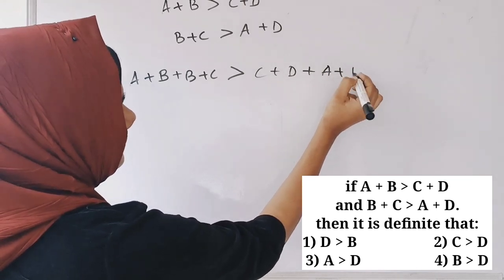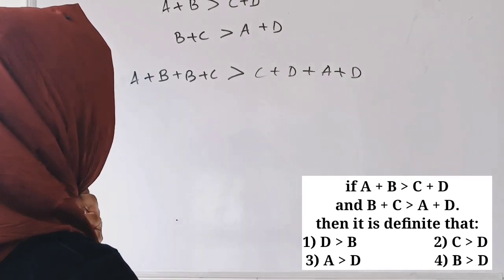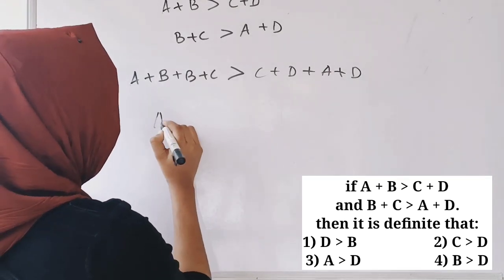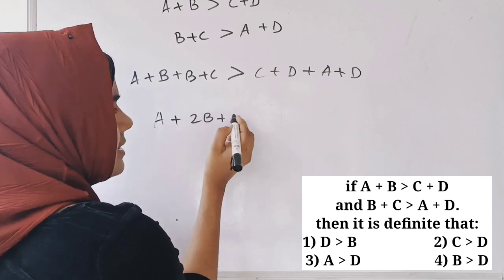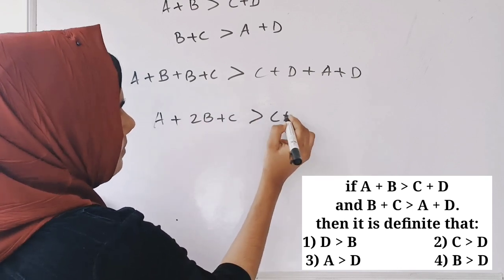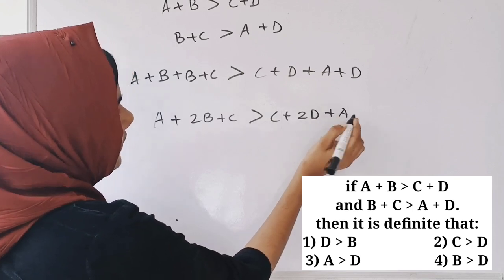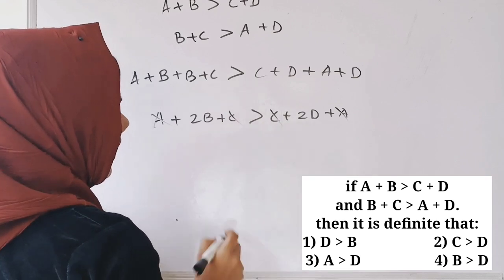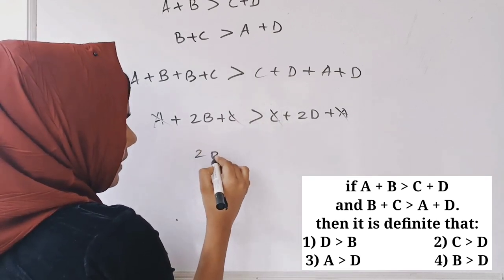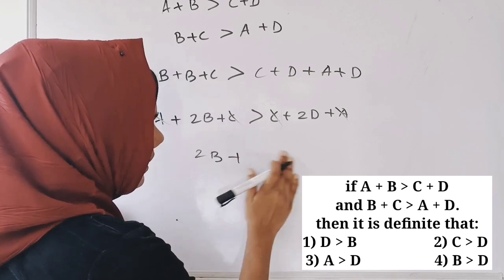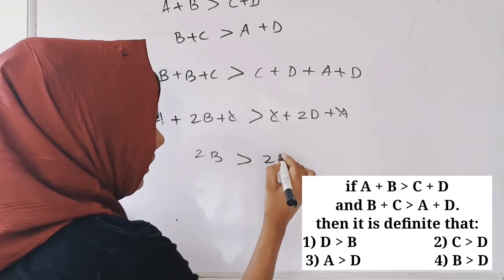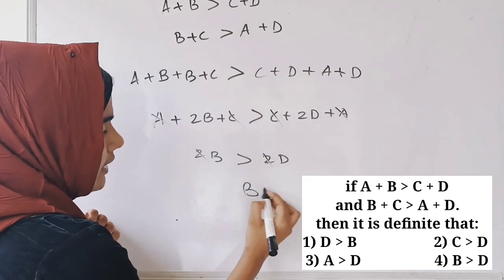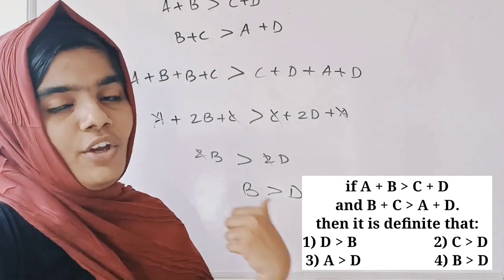So B plus C is greater than A plus D. Working through: A plus 2B plus C is greater than C plus 2D plus A. Cancelling A and C from both sides, we get 2B is greater than 2D, which means B is greater than D.